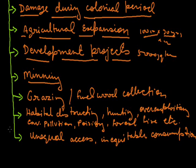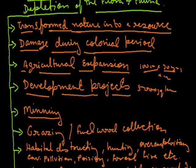unequal access, inequitable consumption of resources and differential sharing of responsibility for environmental well-being. So these all are the main causes for depletion of flora and fauna.